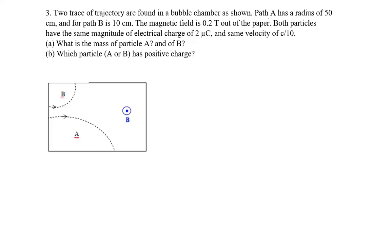Now particle A left a trail with a radius of 50 centimeters. Particle B left a trail with a radius of 10 centimeters. Now the magnetic field inside the chamber is 0.2 Teslas coming out of the paper as shown over here and both particles have the same magnitude electrical charge of 2 micro coulombs and same velocity of C over 10 with C being the speed of light so that's just 3 times 10 to the 8 meters per second divided by 10.